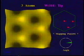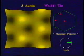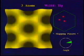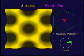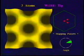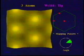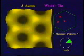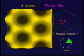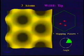Finally, the scanned images are dependent on the shape of the probe tip. The number of atoms and their relative orientation can have a drastic effect on the resultant image.